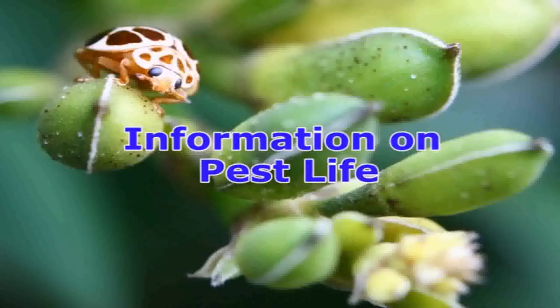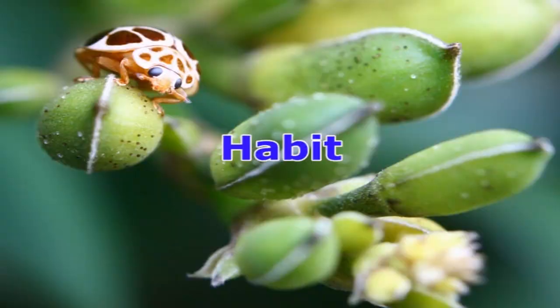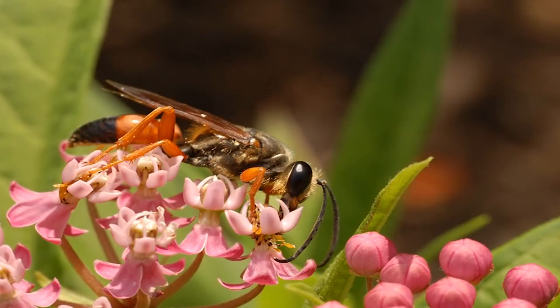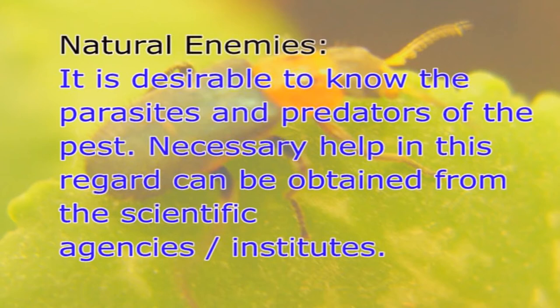Second, information on pest life cycle: one should know the time (season) of pest development, developmental stages from egg to adult, duration of life cycle, number of generations (broods) per year, and method of overwintering. Habit covers aspects such as the stage causing injury, type of mouth parts, mode of feeding, and plants attacked. Plant host range includes information on preferred plants and alternative plants that can act as reservoirs for infestation. It is also desirable to know the parasites and predators of the pest, and the extent to which the pest can move.